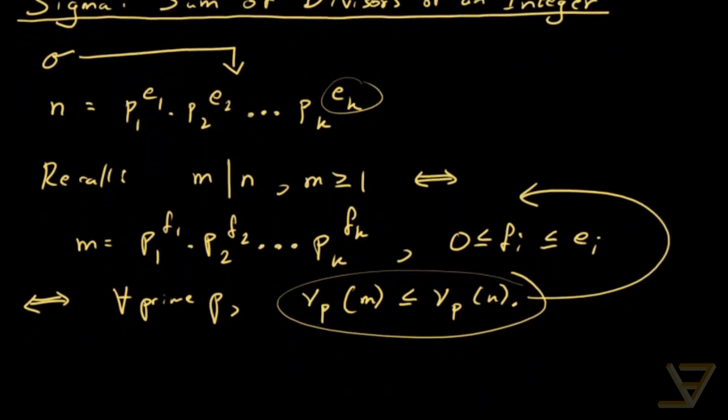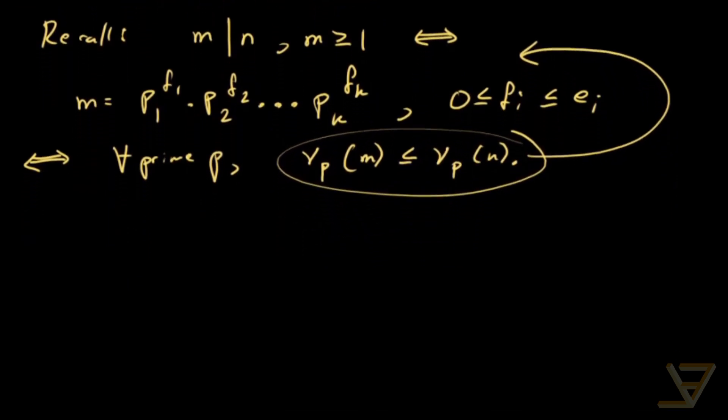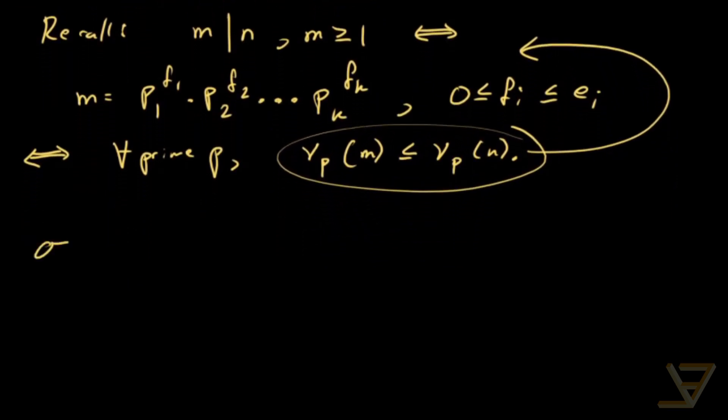So we're going to be using the first criterion, and what we find is that sigma of n is equal to the sum of the positive divisors of n, and that can be written in this way where we have.